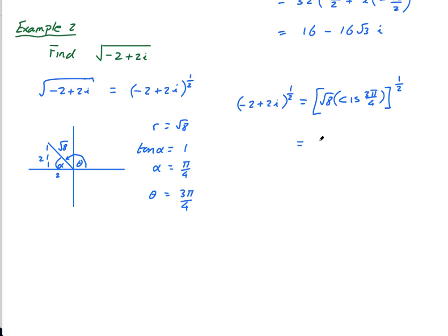Okay, so this gives me root 8 to the power of a half, which is actually 8 to the power of a half to the power of a half, which is actually 8 to the power of a quarter. And then it's going to be cis 3 pi over 4 times 1 half, which is 3 pi over 8.